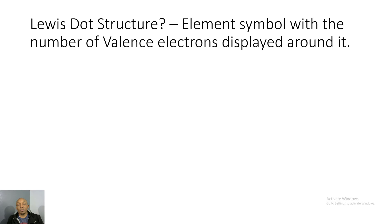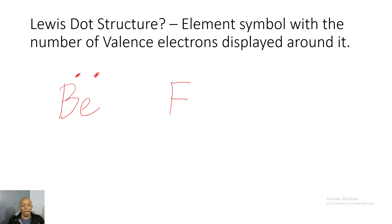Let's talk about Lewis dot structures again. In Lewis dot structures, element symbols are shown with the number of valence electrons displayed around them. For example, for beryllium I will put the element symbol and then the number of valence electrons it has. Similarly for fluorine. The great advantage of Lewis dot structures is that when making ionic bonds it's much easier than using Bohr models, which can take quite some time.